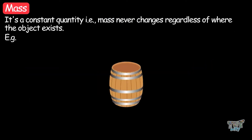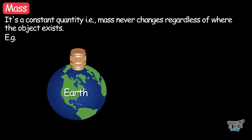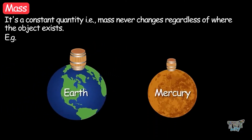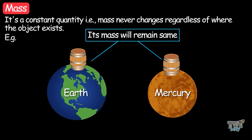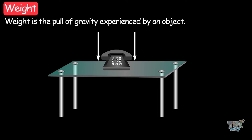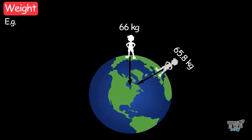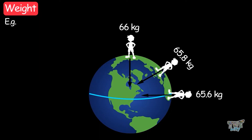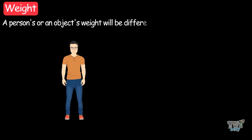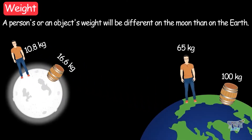For example, whether an object exists on any part of the earth, or even on the moon or another planet, its mass will remain the same. Weight is the pull of gravity experienced by an object. For example, a person will experience a different pull of gravity on the poles than that on the equator. So a person's weight will be different on the poles than on the equator. Also, a person or an object's weight will be different on the moon than on the earth.